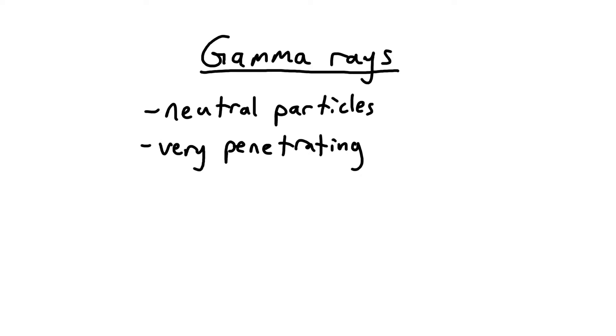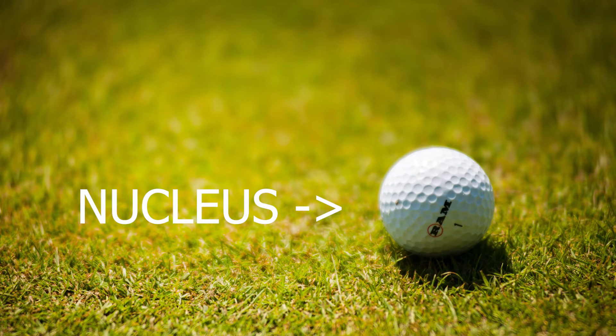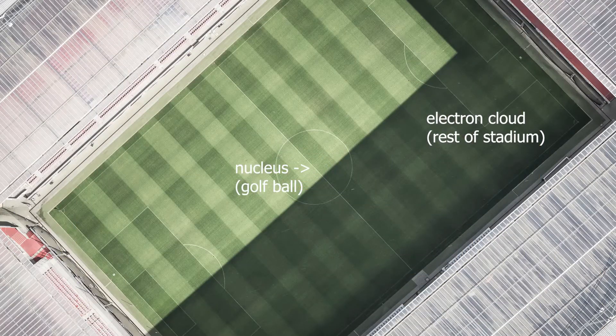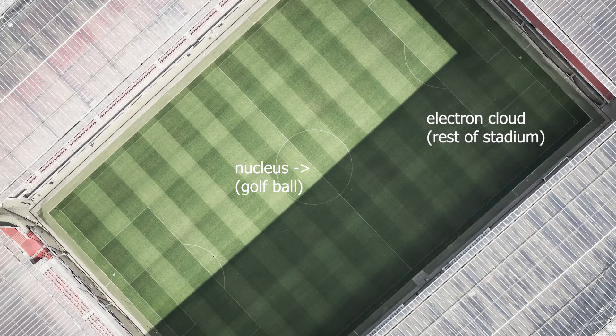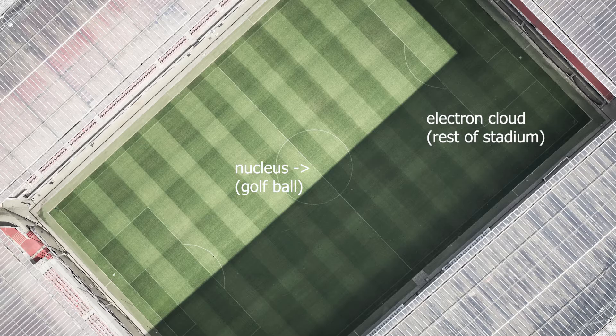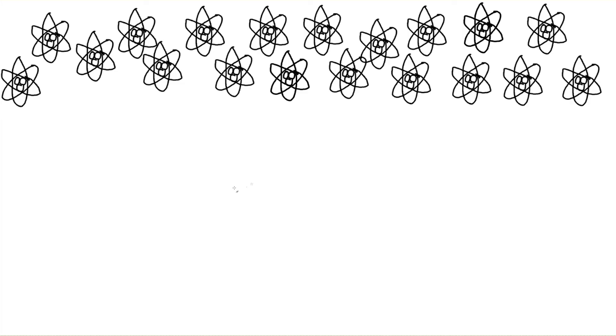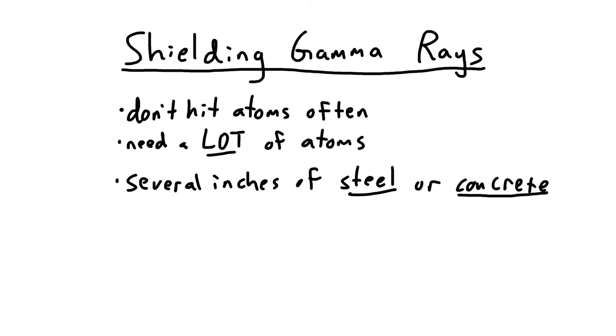Gamma rays are neutral and aren't susceptible to being pushed around by atomic nuclei, which makes them very penetrating. This is because atoms are mostly empty space. Gamma rays can pass right through many atoms with ease. The only way to shield a gamma ray is to put enough atoms in its way, and eventually, the gamma ray will hit some of them. Gamma rays hitting atoms doesn't happen often, though, so you'll need a lot of atoms, at least several inches of steel or concrete.